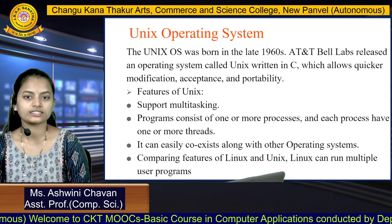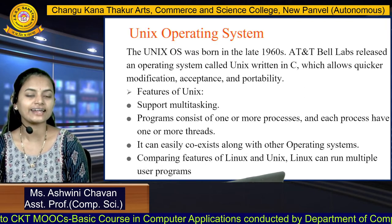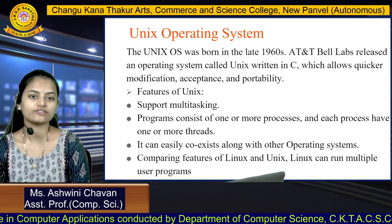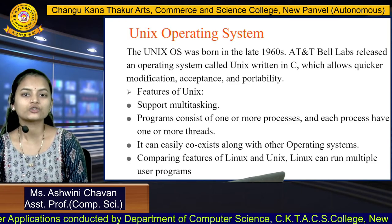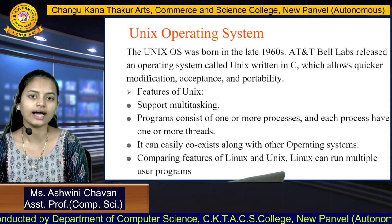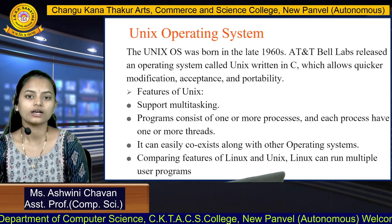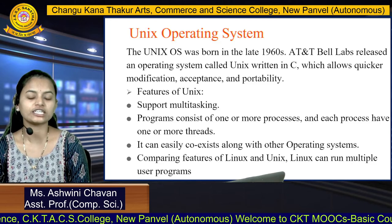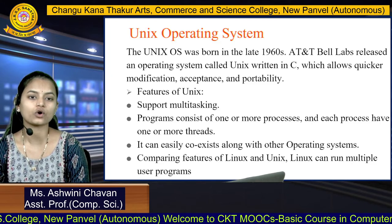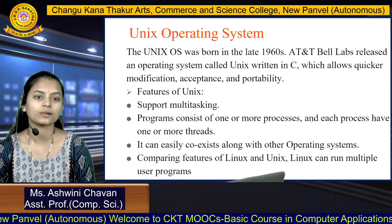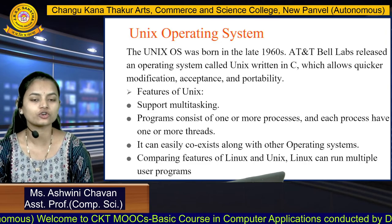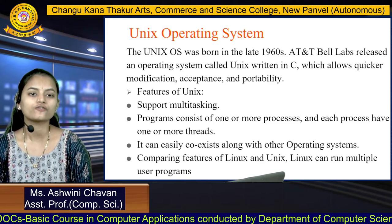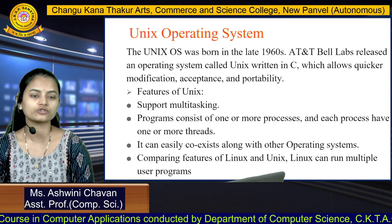Next is the Unix operating system. Unix was born in the late 1960s when AT&T Bell Labs released an operating system called Unix, written in the C language, which allows quicker modifications, acceptance, and portability as per the requirements of the user. Features of Unix include: it supports multitasking, meaning multiple tasks can be performed at the same time. Programs consist of one or more processes, and each process has one or more threads — threads are small parts of a single process. Unix can easily coexist along with other operating systems.